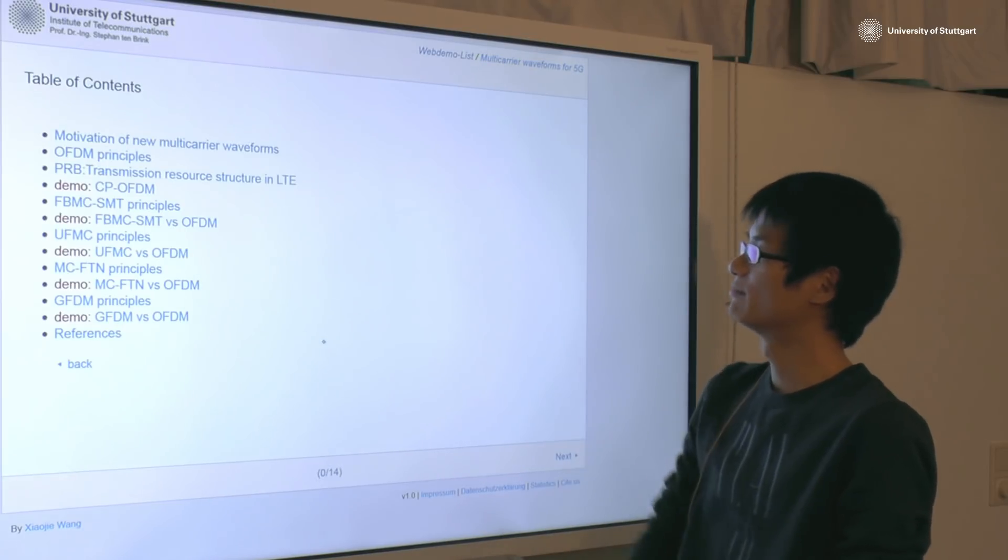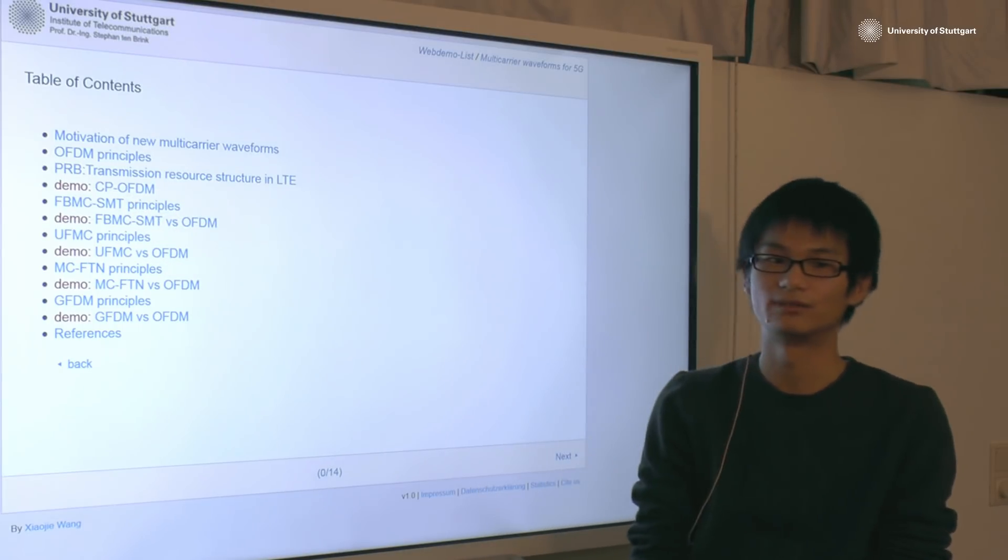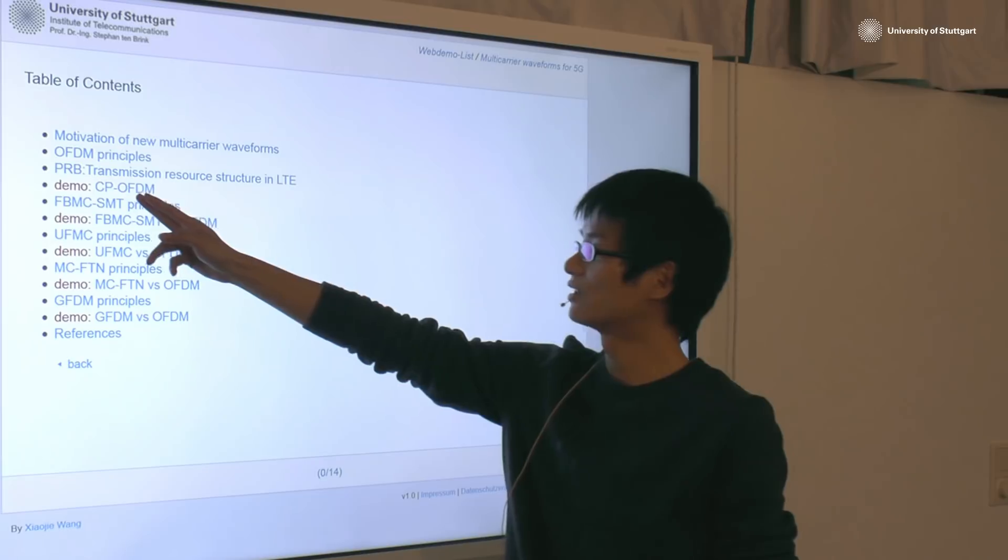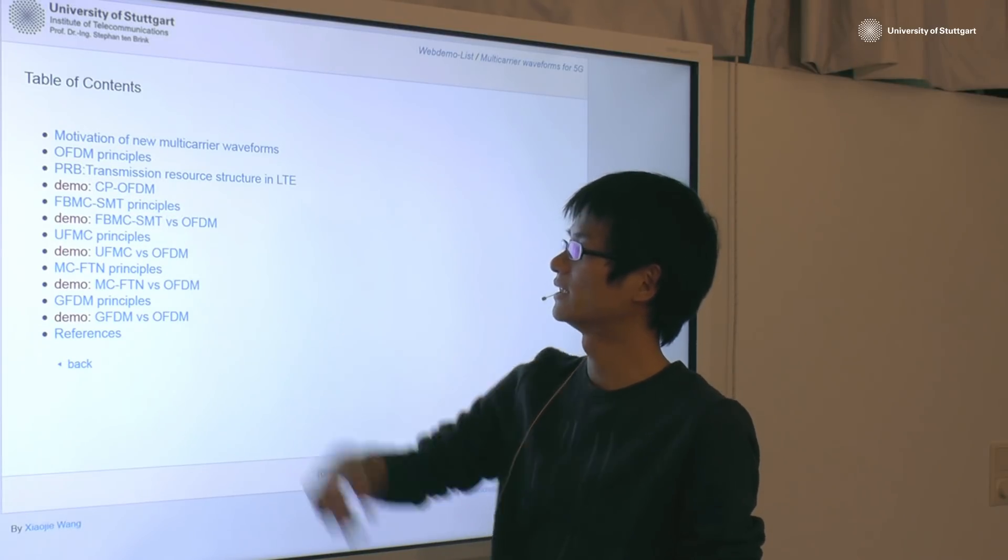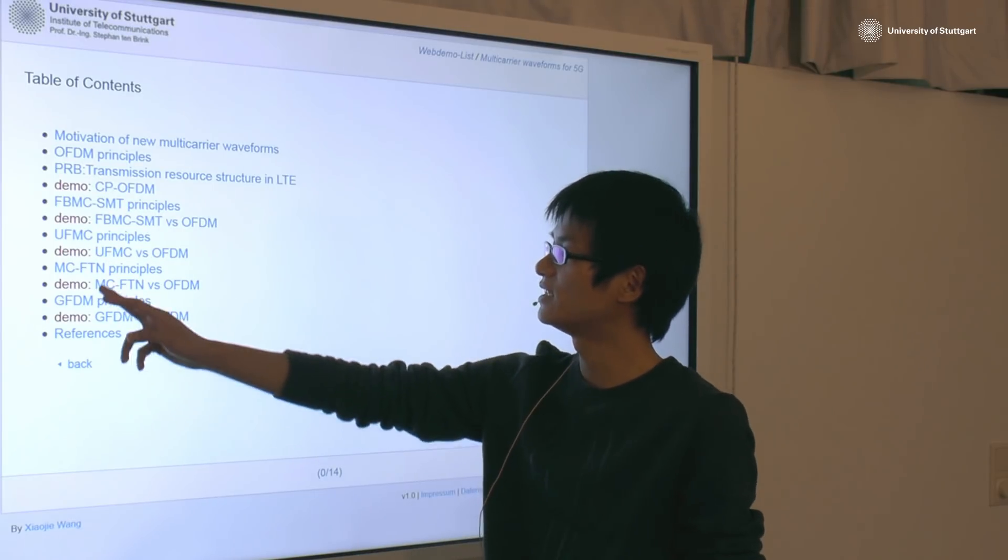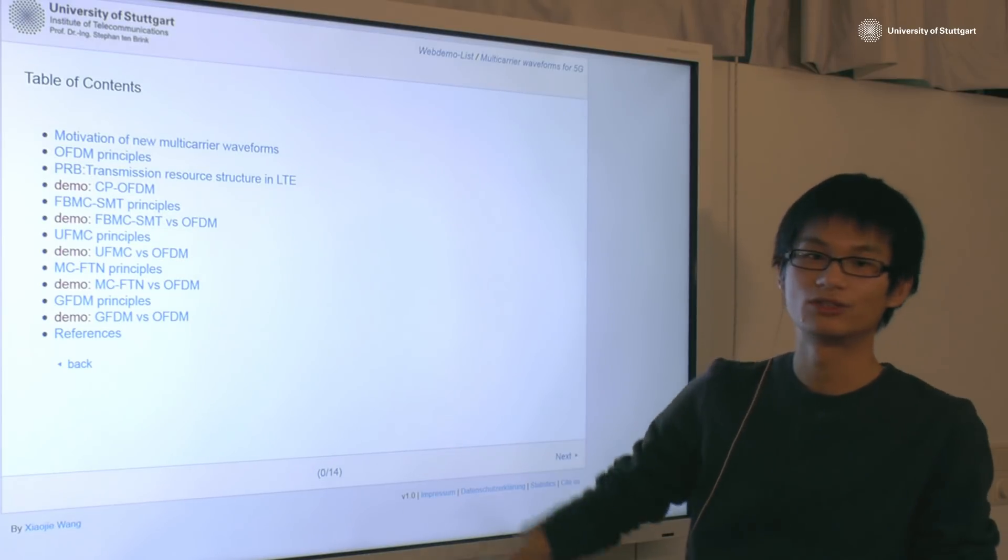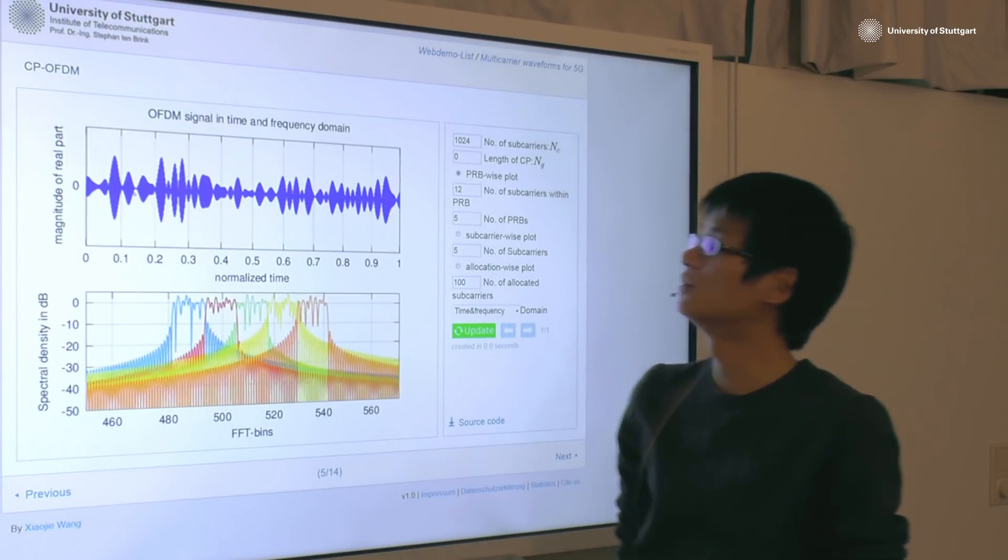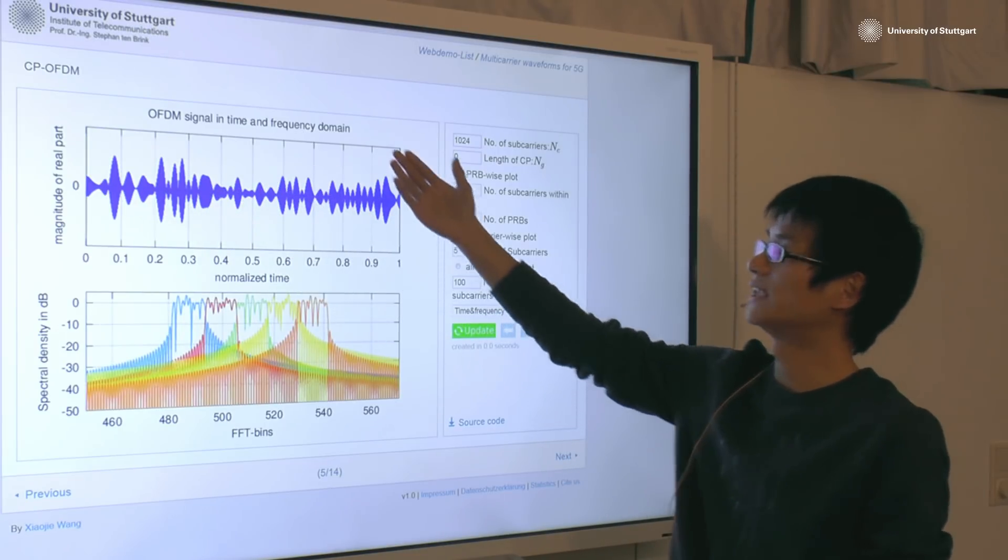In this web demo, various multi-carrier modulation technologies are introduced, such as the classical Cyclic-prefixed OFDM and Filterbank multi-carrier, and novel modulation schemes like UFMC, Faster-than-Nyquist and GFDM are also introduced. First of all, let's look into the signal properties of the Cyclic-prefixed OFDM.